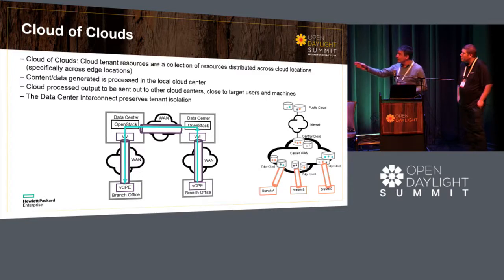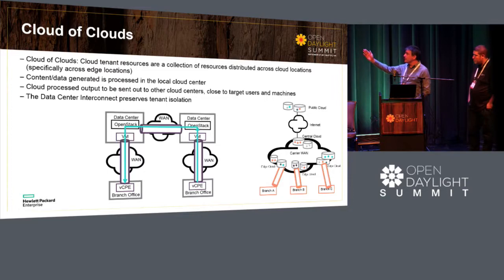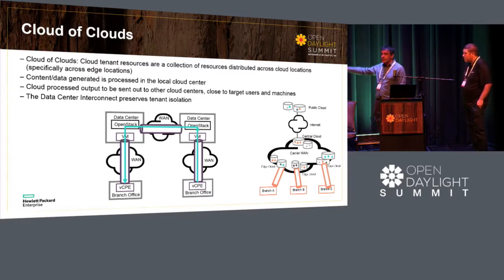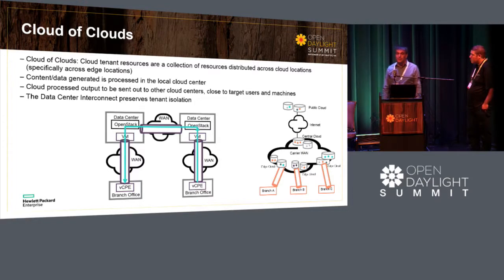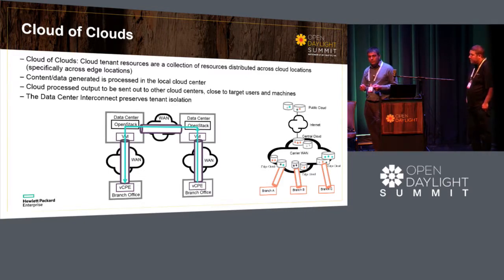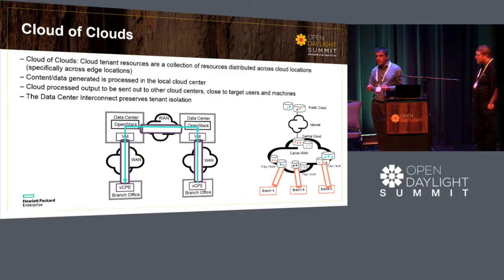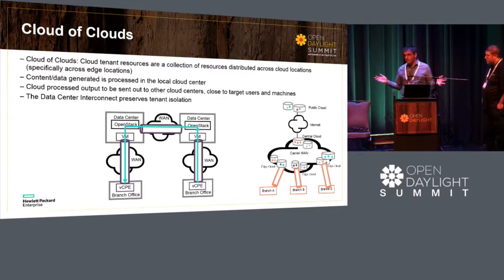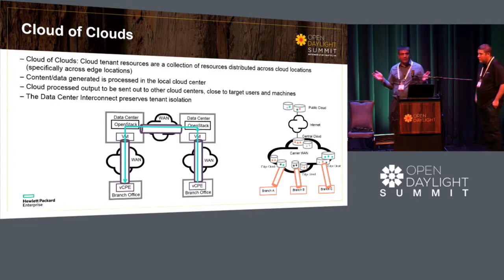I have traffic running from the left side, from the branch office, connected to the data center, and in between data centers, OpenStack, and out to the other side. You can have multiple branches, each branch with its own edge computing. Once we go to mobile edge computing and augmented reality, those are bandwidth-consuming needs that require local compute resources.